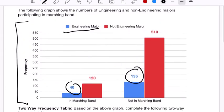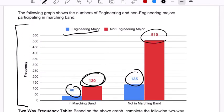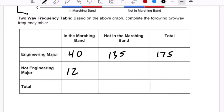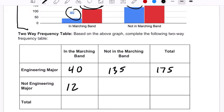Out of the people who are not engineering majors, 120 are in marching band, and 510 are not. So 120, 510, that's 630 in total.